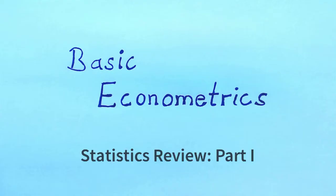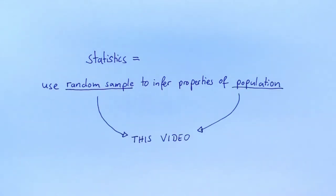Basic Econometrics. Statistics is the science of using a random sample to infer properties of a population. In this video I'll talk more about the random sample and the population. Let's get started.